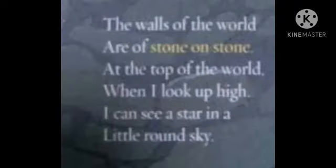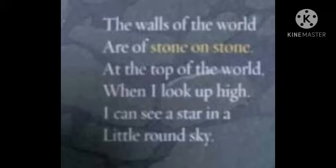The walls of the world are of stone on stone. Here, the frog says that the world is having walls, and that wall is made of stone over stone, and over that another stone. When I look up high, I can see a star in a little round sky. The frog says that when it looks up high, it sees a star in a little round sky, because the opening of the well is round.